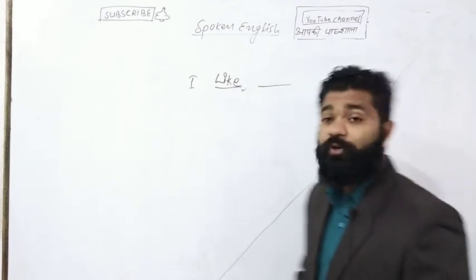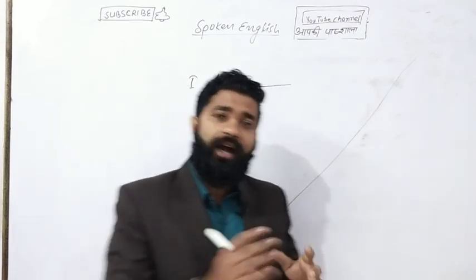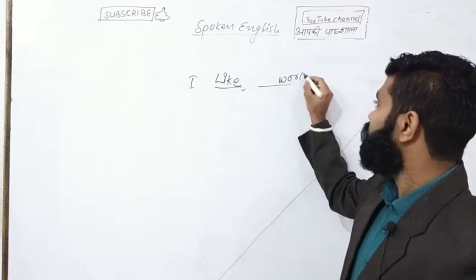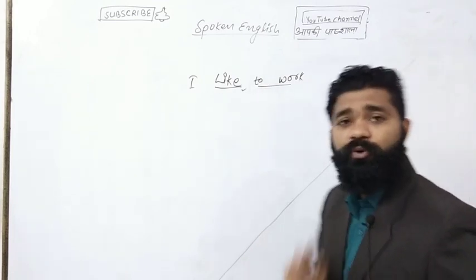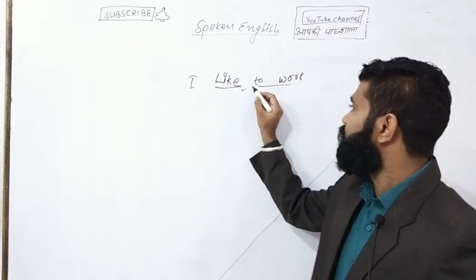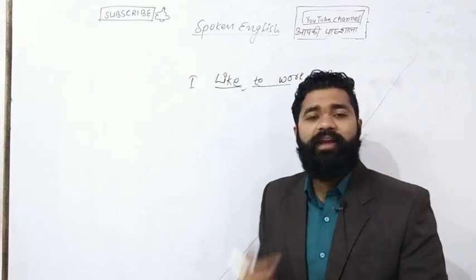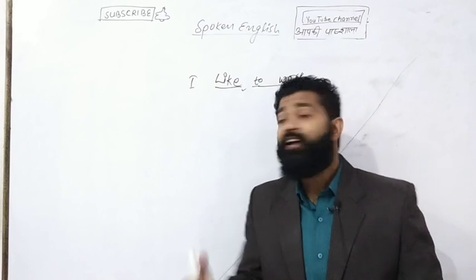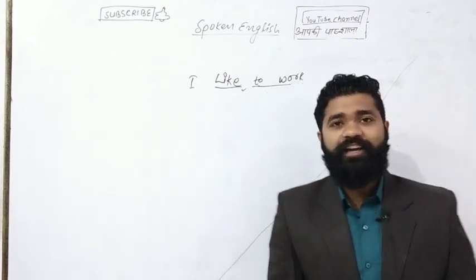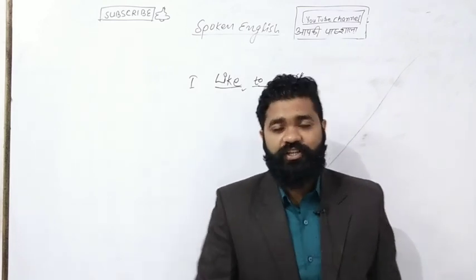थोड़ा सा और आगे बढ़ते हैं. मैं कहूं कि मुझे कोई भी काम पसंद है, तो 'like' के बाद में 'to' use करना है. Grammar का rule यह है: एक verb के बाद में दूसरी verb हमेशा 'to' से connect करके लिखेंगे. जैसे — I like to work. मुझे काम करना अच्छा लगता है. मुझे पढ़ाना अच्छा लगता है — I like to teach. I like to teach English.